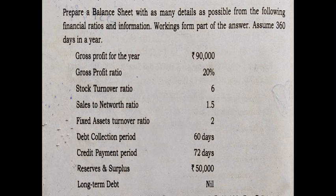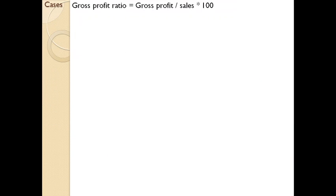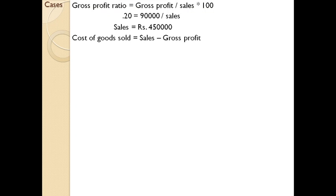As usual, gross profit and gross profit ratio are given. Since gross profit ratio equals gross profit divided by sales, and gross profit ratio is 0.20, you can directly find the amount of sales as 4,50,000. Once you have the amount of sales as well as gross profit, the next step is to find cost of goods sold. Cost of goods sold equals sales minus gross profit: 4,50,000 minus 90,000 gives 3,60,000 as cost of goods sold.